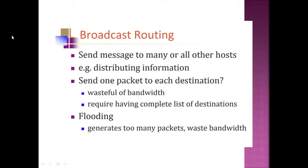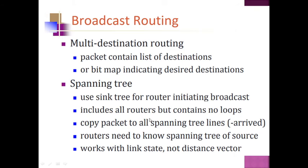To do broadcast routing, flooding is used, but it generates too many packets and wastes bandwidth. There is also multi-destination routing, where a packet carries a list of destinations and a bitmap indicating the desired destinations. By using either of these two methods, information is broadcast. While broadcasting, if there is a loop inside the network, a spanning tree is used as a sink tree for initiating the broadcast.